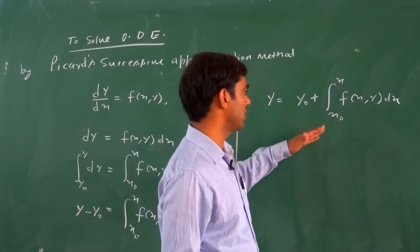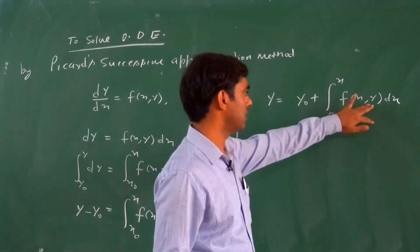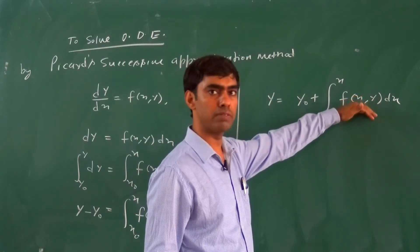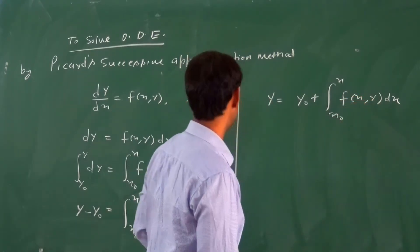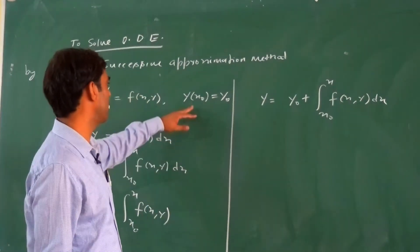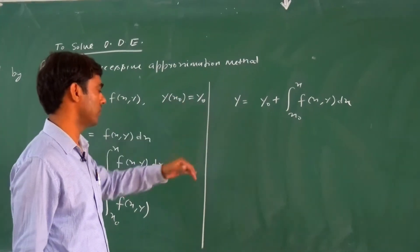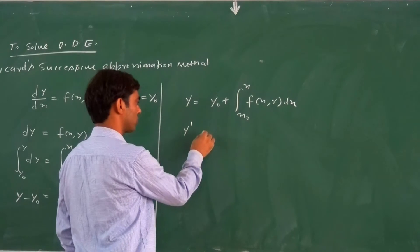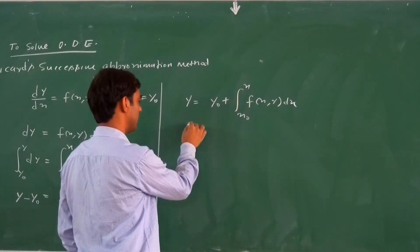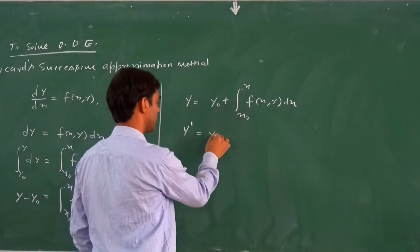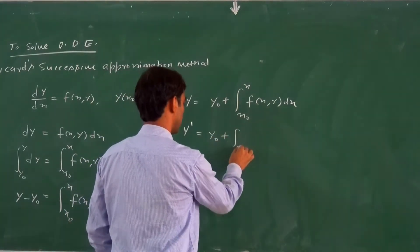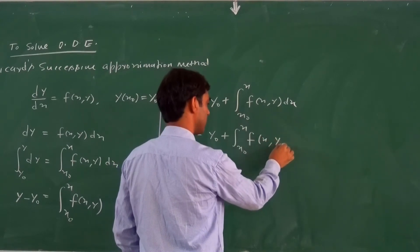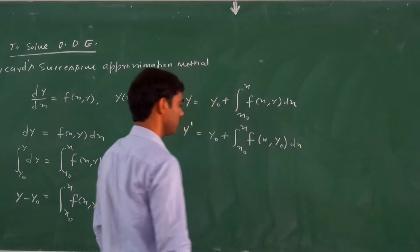Here, what Picard does is replace the value of y by y₀ — a constant — so the integrand becomes a function of x only, since we have the value of y at x₀ equal to y₀. This gives us the first approximation y₁ = y₀ + ∫(x₀ to x) f(x, y₀) dx.